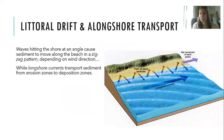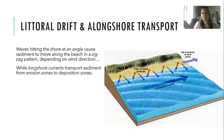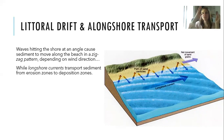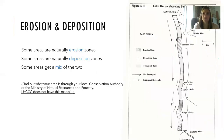Littoral drift and longshore transport — two terms I never knew before starting work at the Coastal Center almost four years ago, but a very cool phenomenon that happens on Lake Huron. When waves hit the shore, it's typically at an angle. This angle causes sediment to zigzag through the near shore waters, adding sediment to the beach or taking sediment away from the beach — or in the case of bedrock shorelines, potentially taking trees away. These longshore currents transport sediment from erosion zones into deposition zones.